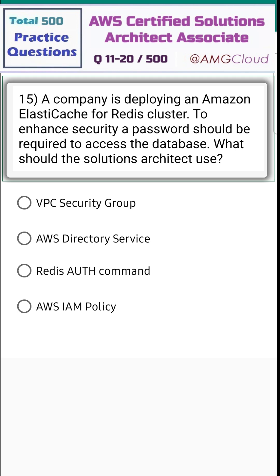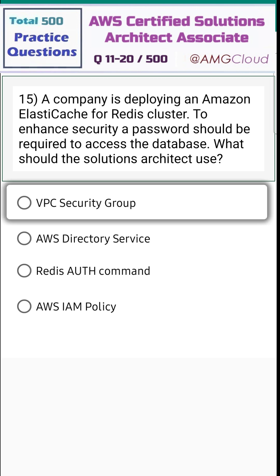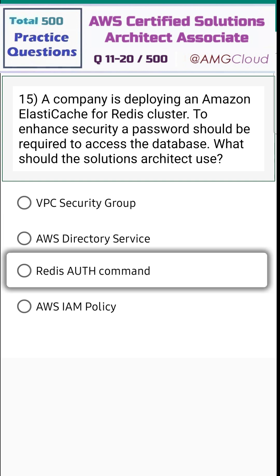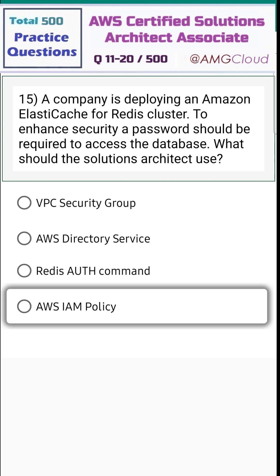Question 15. A company is deploying an Amazon ElastiCache for Redis cluster. To enhance security, a password should be required to access the database. What should the solutions architect use? Options: VPC security group, AWS Directory Service, Redis AUTH command, or AWS IAM policy.